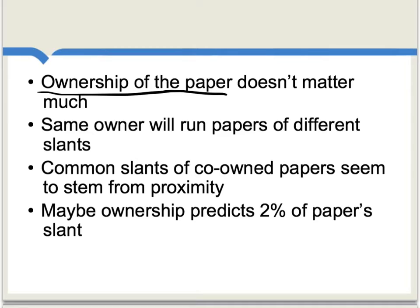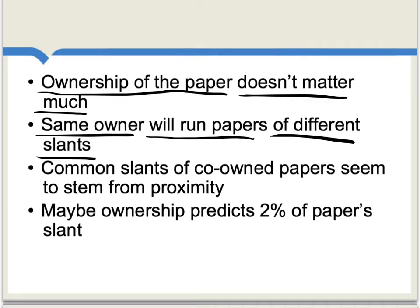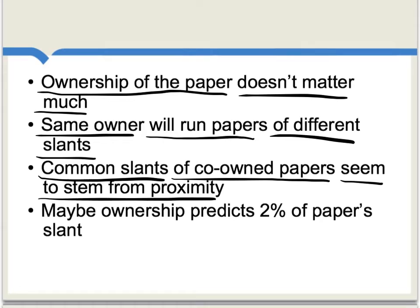The research also shows that ownership of the newspaper doesn't matter much for predicting the political slant of that newspaper. For instance, the same owner very often will run newspapers of different political slants. To some extent, we do find common slants of co-owned papers — papers owned by the same family or same corporation — but most of that seems to stem from proximity. That is, co-owned papers tend to be in the same region, and when you adjust for that proximity, most of that effect goes away.